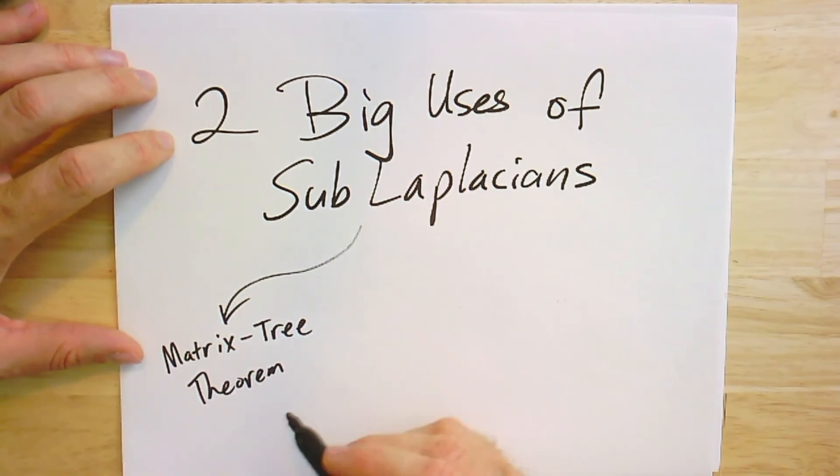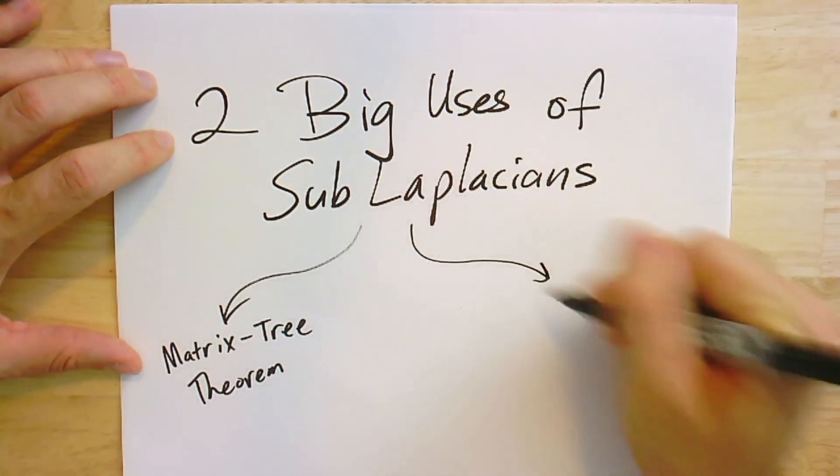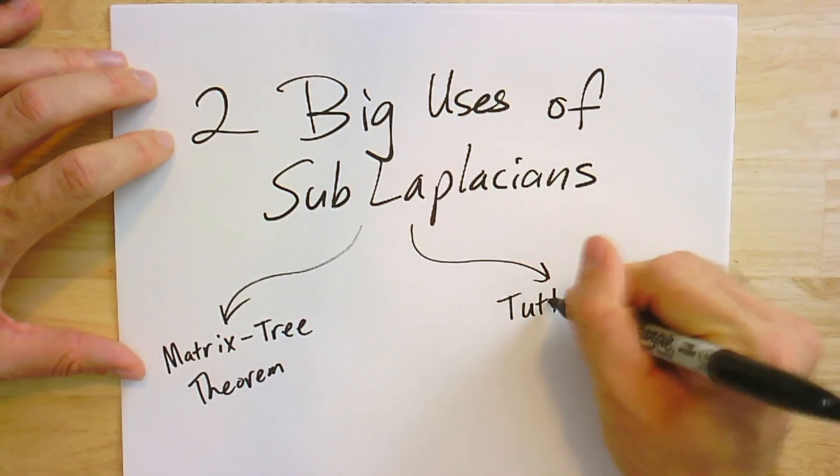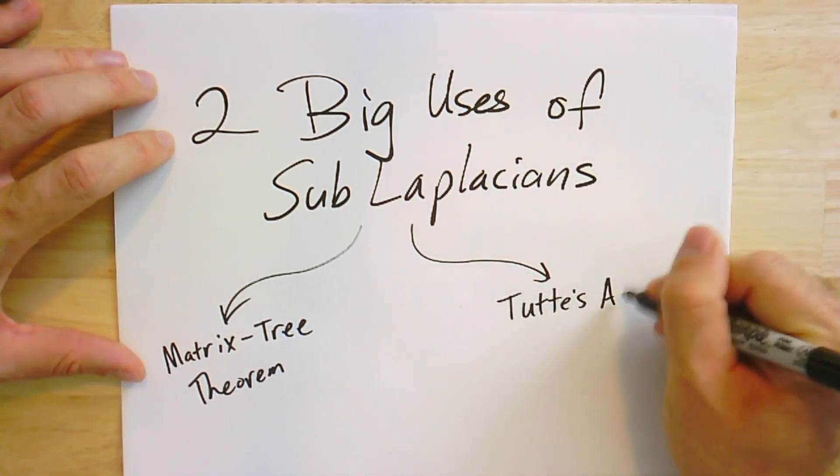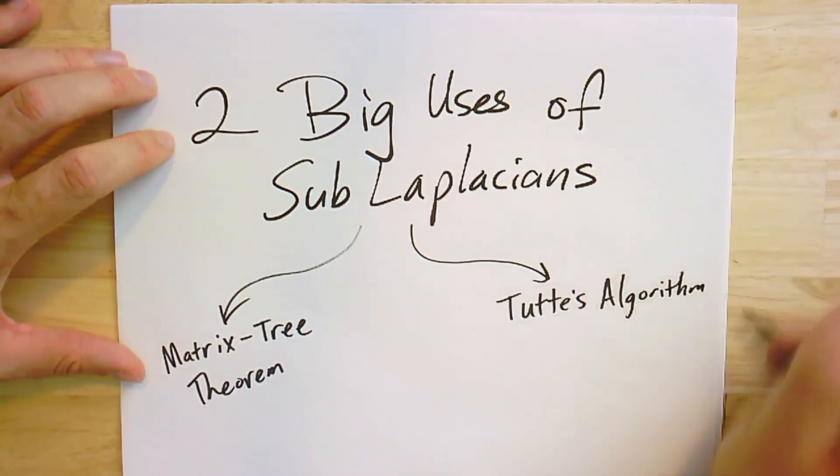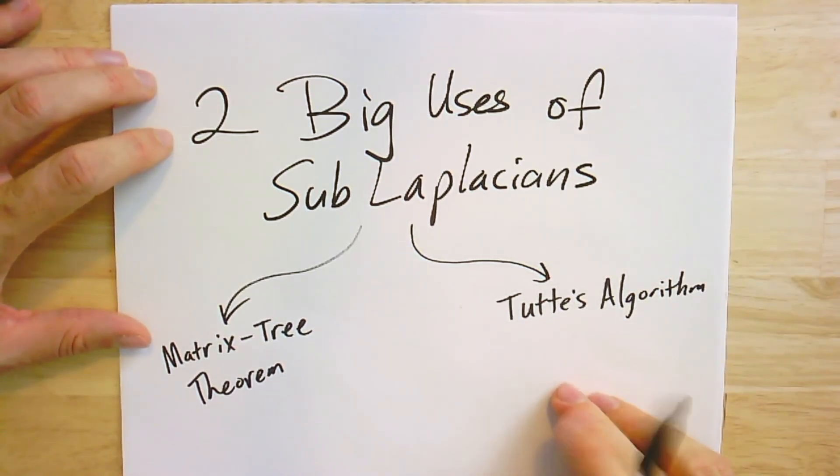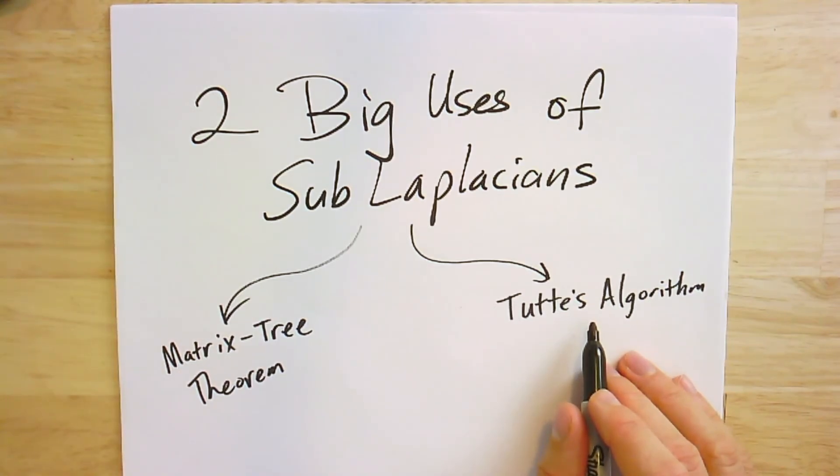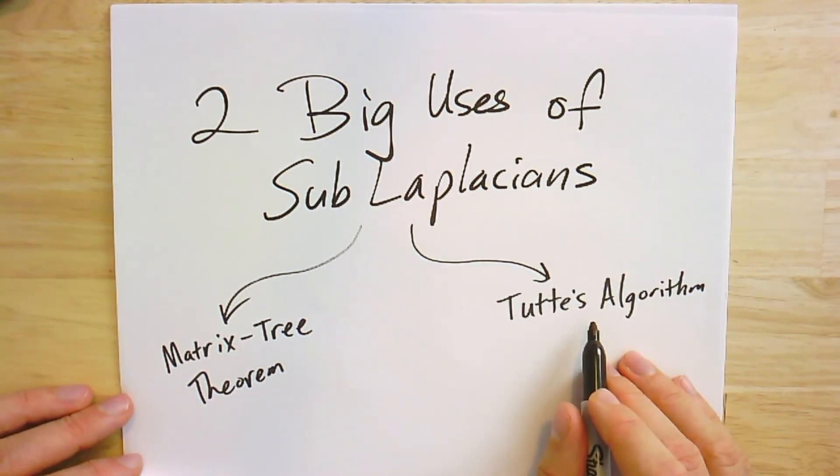The other thing we're going to use it for, which is so much fun, is Tutte's algorithm. And this is an algorithm that will give us beautiful drawings of graphs in the plane. And it goes back to the 1960s when Tutte wrote the paper. He just titled the paper 'How to Draw a Graph,' like this was the last word on drawing graphs. And it turned out to not be the last word on drawing graphs, but man is it a nice algorithm. So we'll get to this one soon.